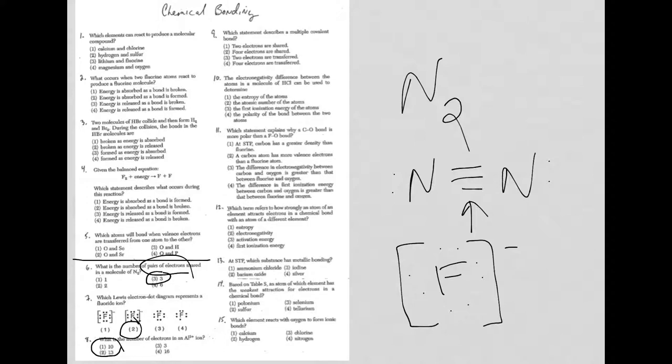For question 9, which statement describes a multiple covalent bond? Alright. So, we're seeing this whole multiple covalent bond thing again. Also, of course, you've got to remember, covalent means sharing of electrons. Transferring, well, that's for ionic. So, we're going to cross out choices 3 and 4, and we're left with 1 or 2. 2 electrons that are shared is only a single bond, right? 2 electrons per bond. So, it's got to be choice 2.